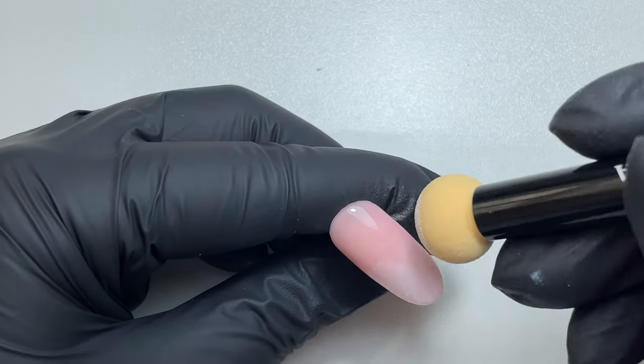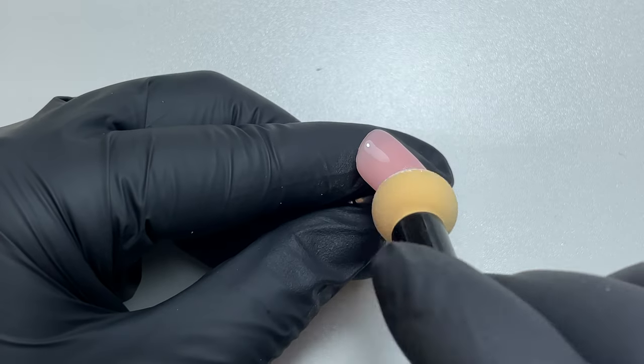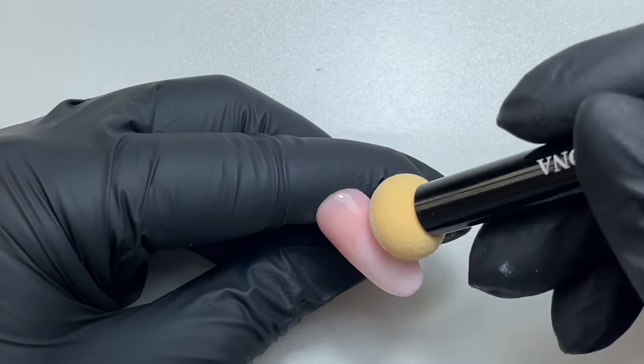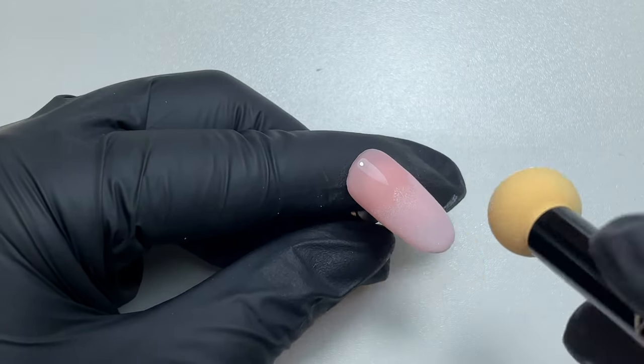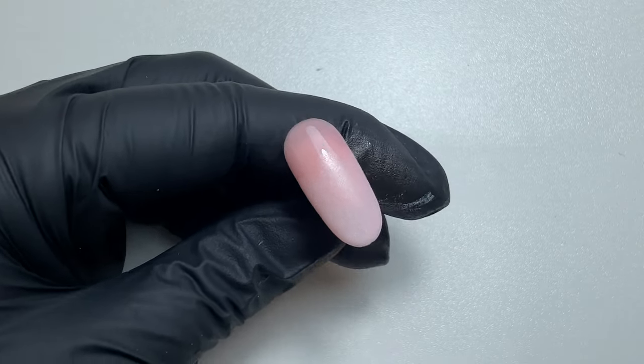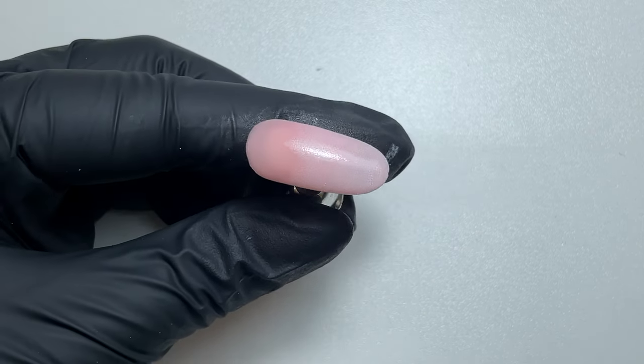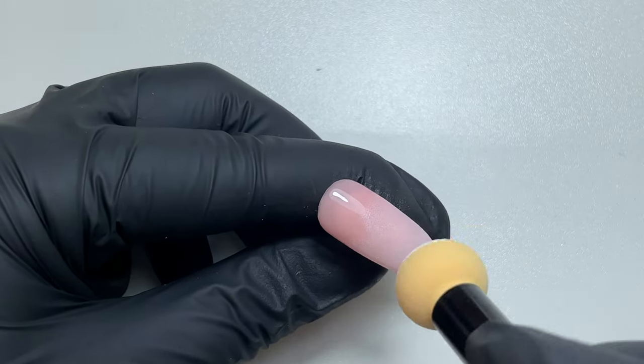It's up to you. I prefer to use it with the tacky layer because I find it blends a little bit better. I'm just tap tap tapping, and then once I'm happy I can pop that into the lamp to cure. As you can see it applies perfectly fine, however I do find this even better when the sponge is wet.